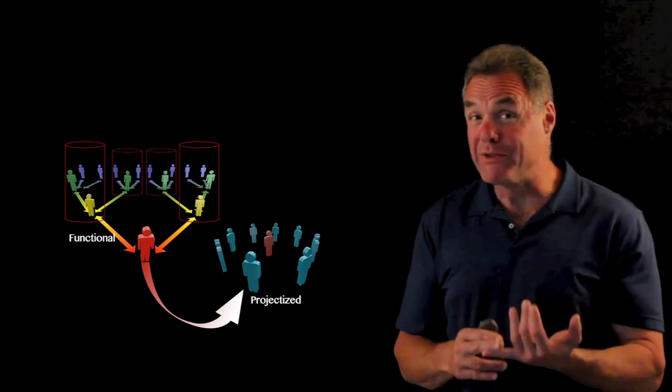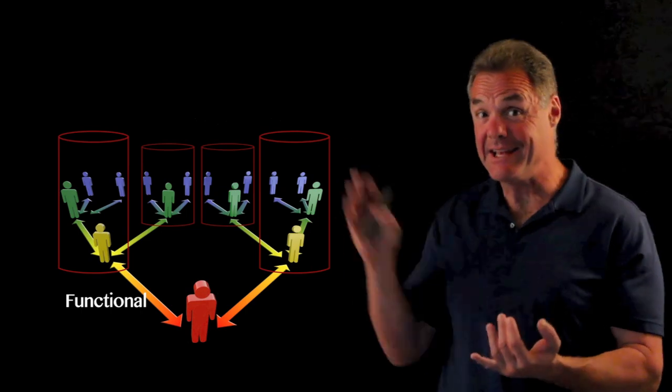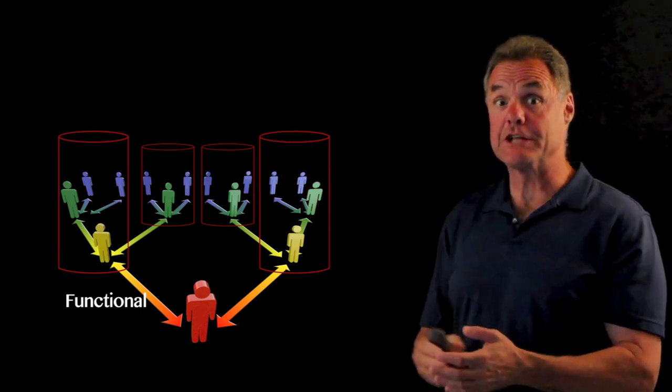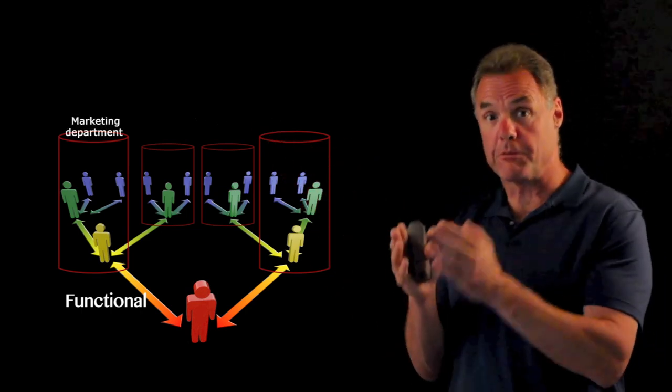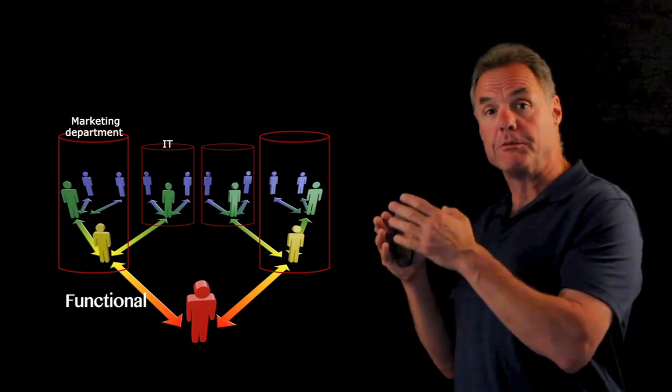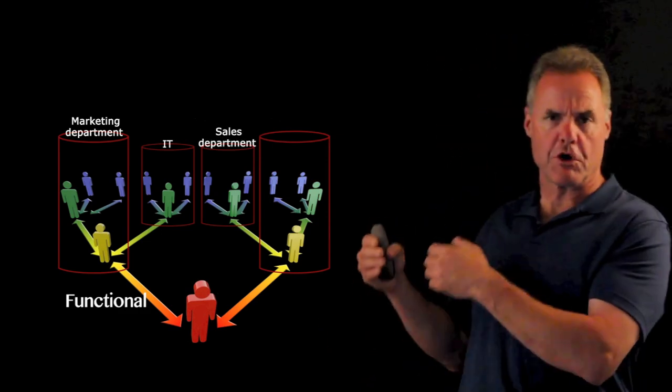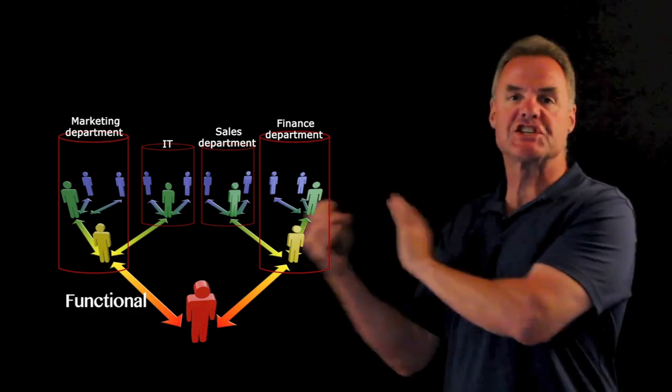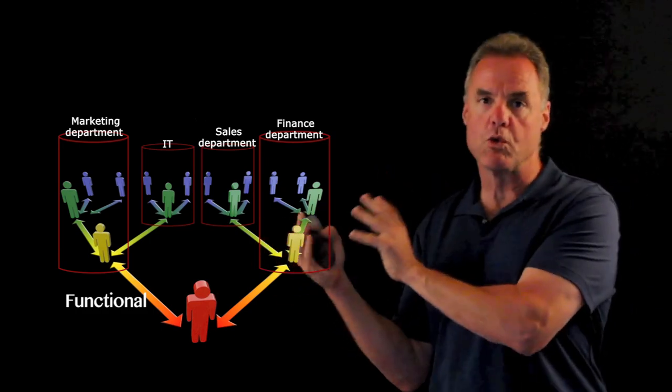Remember, you're probably in a functional organization today. You see the silos. That's where your marketing department is separate from your IT department, separate from your sales department, separate from your finance department. That's siloed. That's a functional organization.